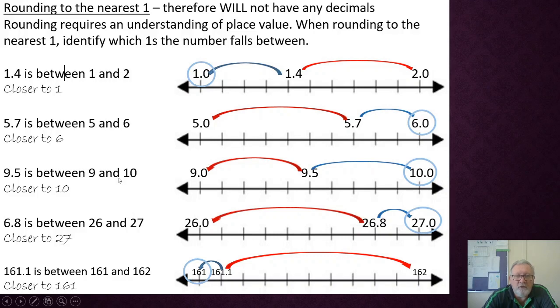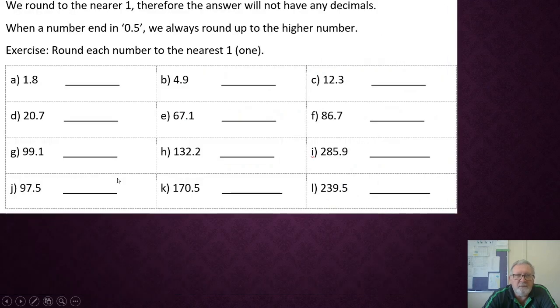Alright, we're going to see if you can apply that understanding yourself to this exercise. Remember, if it ends in five tenths, we round up. So all of these answers should be whole numbers. You look at the number and you compare the number immediately after the decimal point, the number in the tenths place value to five. If it's less than five, round down. If it's more than five, round up. Alright, pause the video and do this exercise. Have a good go.